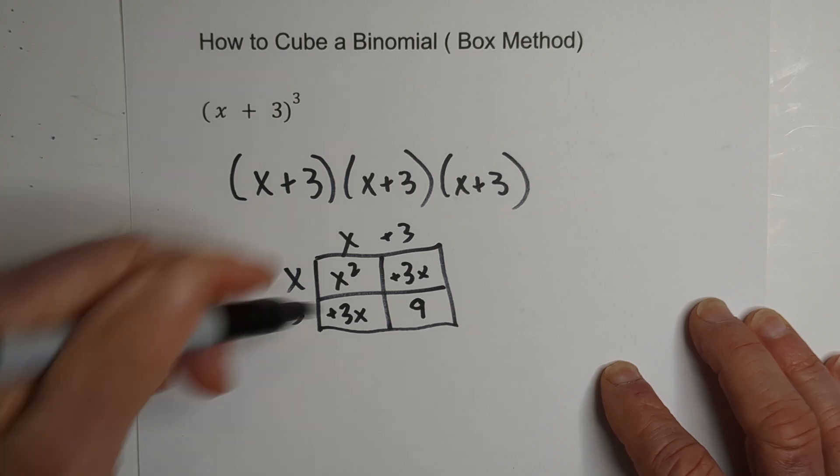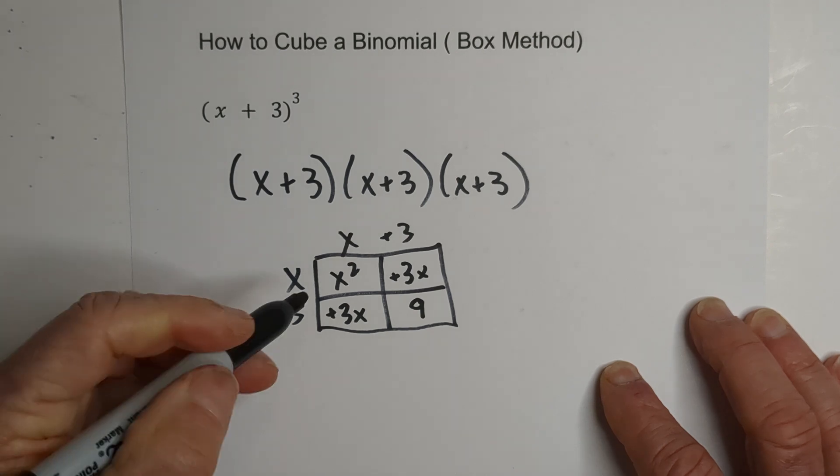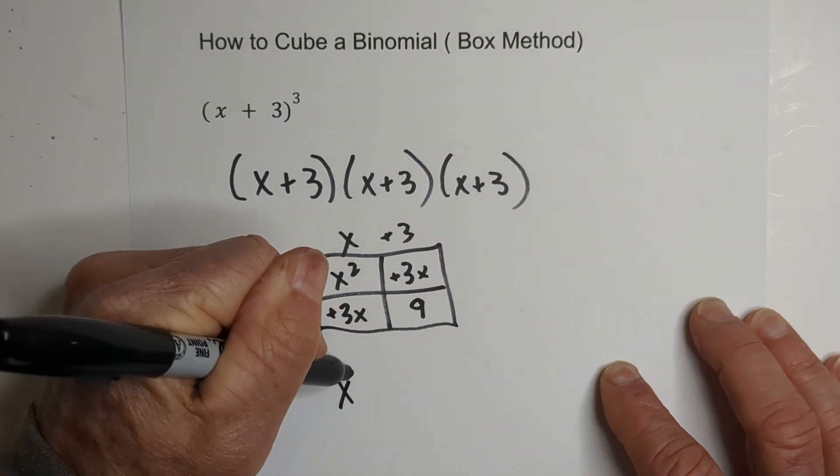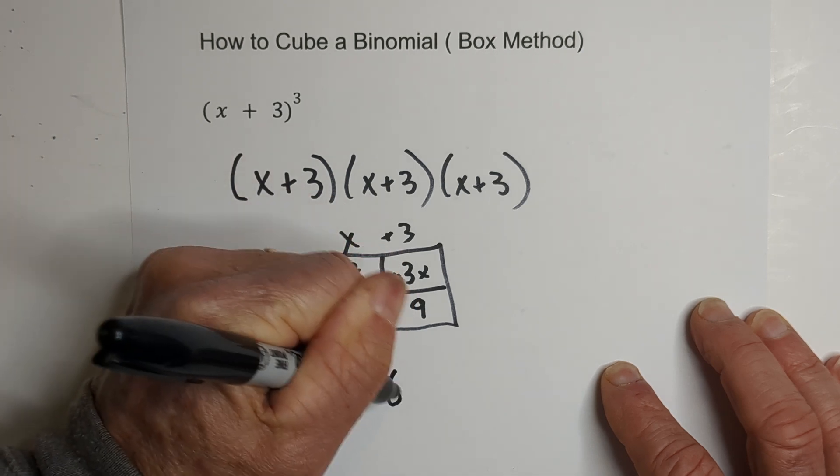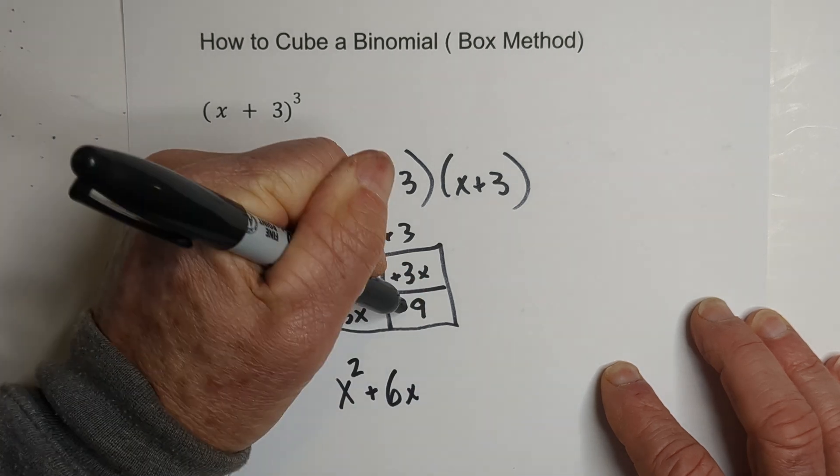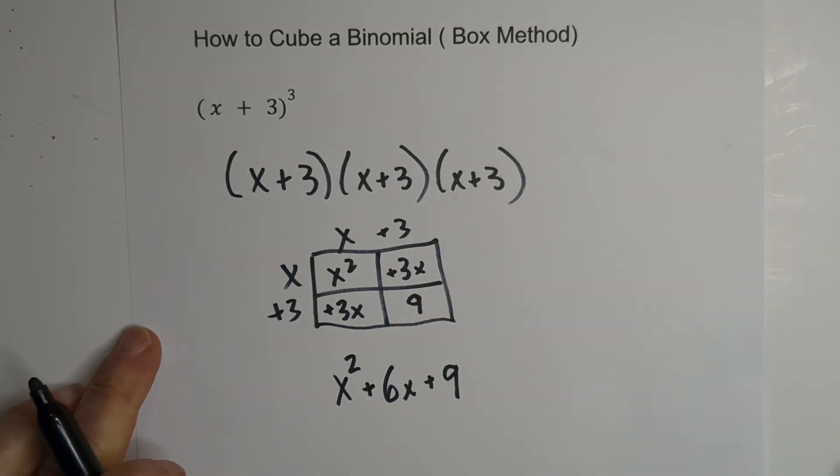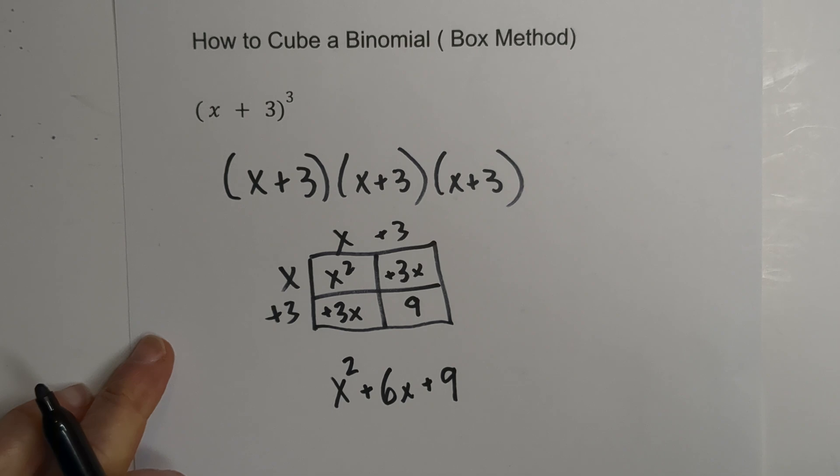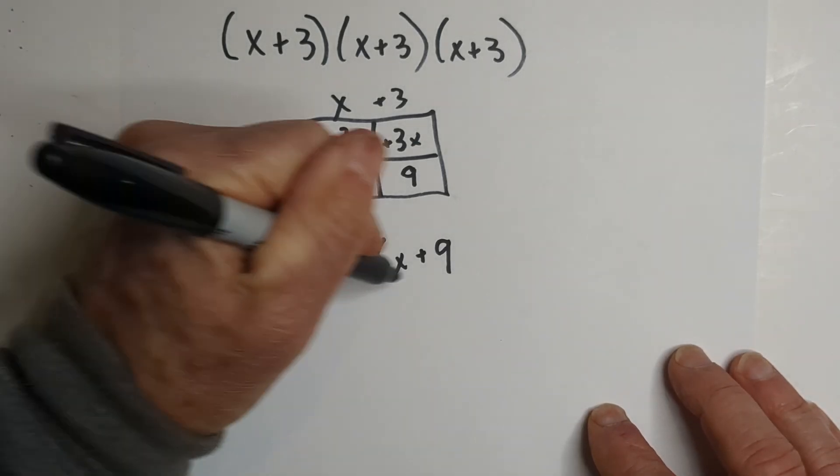Now we can combine like terms. If you do this correctly, these two boxes will always be like terms. So now we have x squared plus 3 plus 3 is 6x, and then we have a positive 9. So now we've completed phase 1. Let's get going on phase 2.